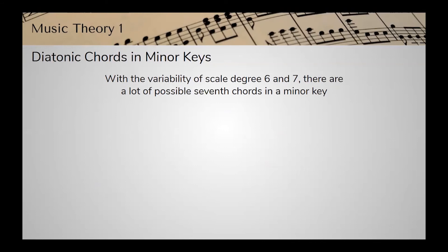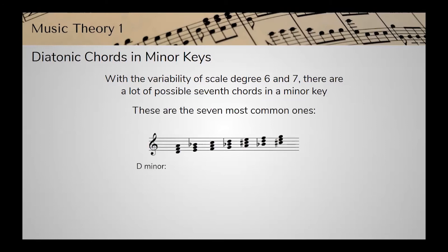The variability of scale degrees six and seven is something we have to deal with in minor keys, so there are many more possible seventh chords than we'll cover — so many that most theory books don't even cover all of them. We'll limit our discussion to the seven most common types, based mostly on the harmonic minor scale. In D harmonic minor: the first chord is a minor triad; adding a C to it creates a minor seventh chord, since the distance between the root and seventh is a minor seventh — written as lowercase i seven. The two chord, with a D added, gives a diminished triad with a minor seventh — a half diminished seventh chord.